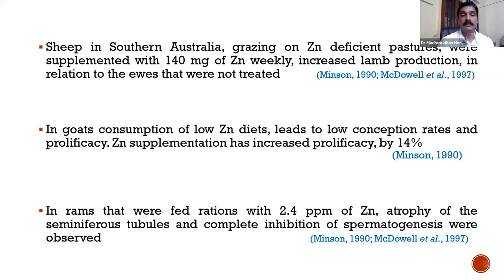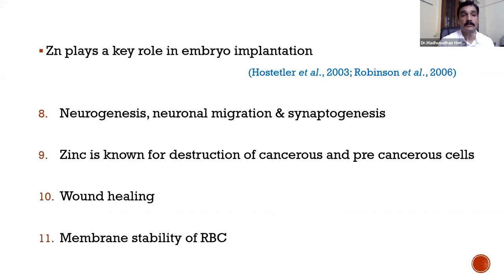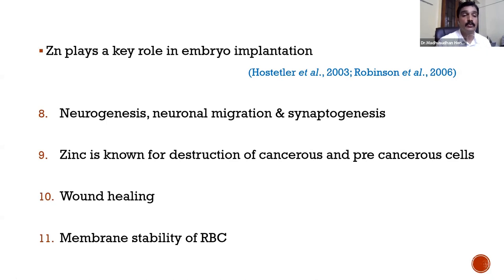In rams fed rations with 2.4 ppm zinc — a deficient level — atrophy of the seminiferous tubules and complete inhibition of spermatogenesis was observed. Zinc plays a key role in embryo implantation, and it has roles in neurogenesis, neuronal migration, and synaptogenesis. Zinc is known for destruction of cancerous and precancerous cells, is involved in wound healing, and plays an important role in the membrane stability of red blood cells.